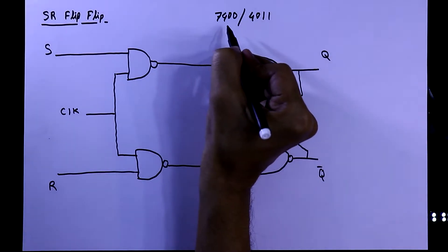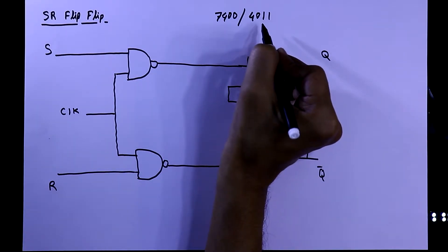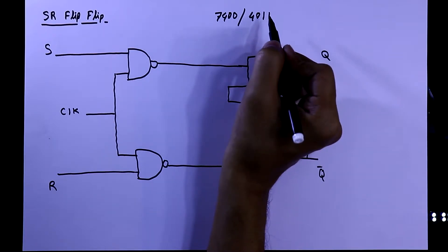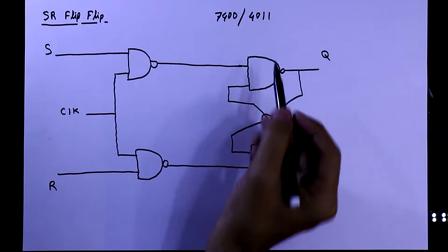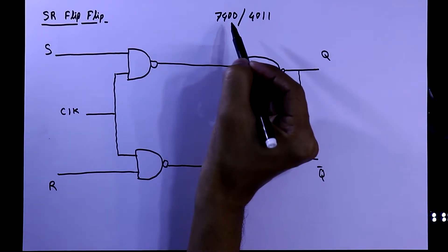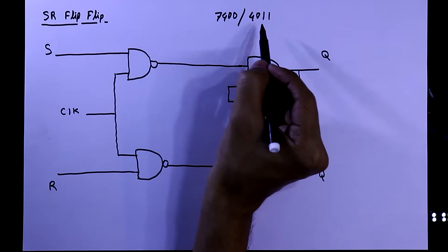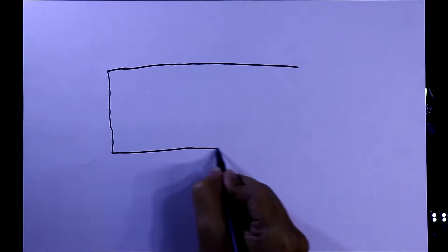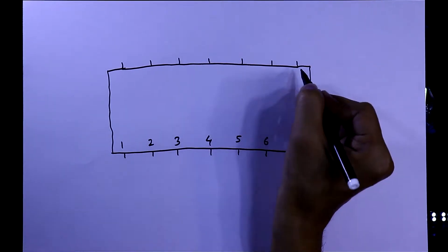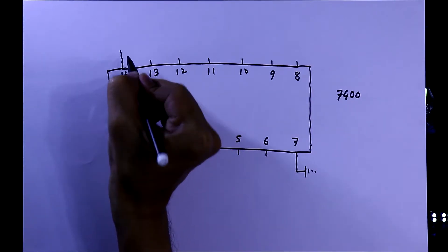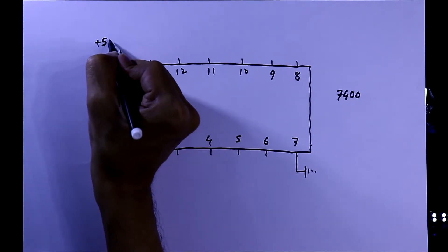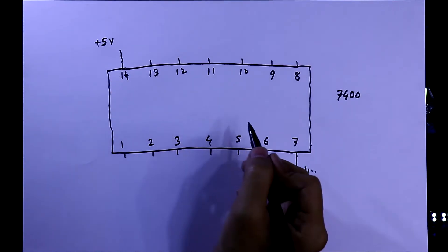7400 is a TTL IC and 4011 is a CMOS IC — I have explained both of them, link in the description below. For this practical we'll use 7400; you can also use 4011. Now we have to see the pin diagram of 7400. Pin number 7 is ground and pin number 14 is plus 5 volt, and it has four NAND gates.